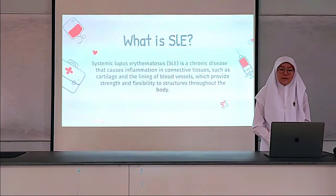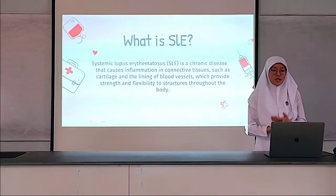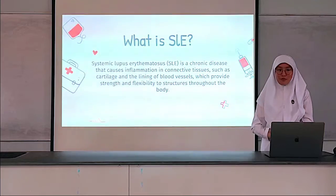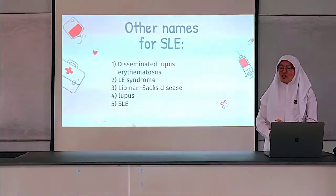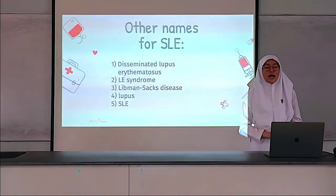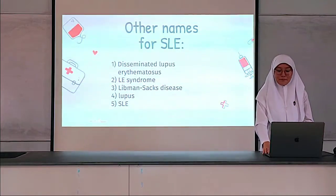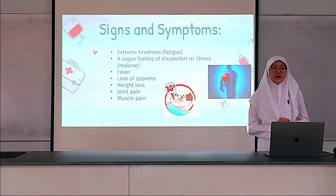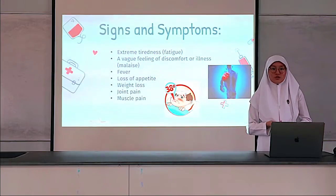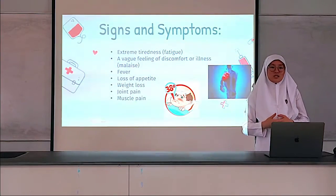So what is SLE? Systemic Lupus Erythematosus, SLE, is a chronic disease that can cause inflammation in connective tissues such as cartilage and the lining of blood vessels, which provide strength and flexibility to structures throughout the body. Other names for SLE include: Disseminated Lupus Erythematosus, LE syndrome, Libman-Sacks disease, or simply lupus. Note that signs and symptoms may vary from one individual to another.